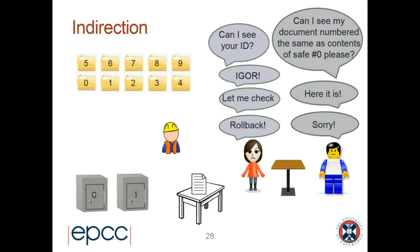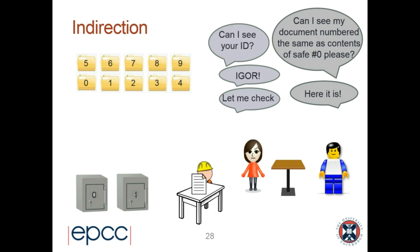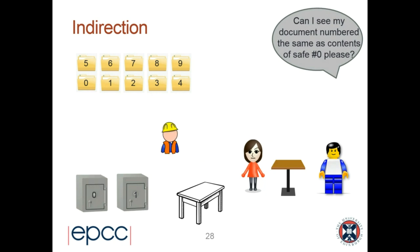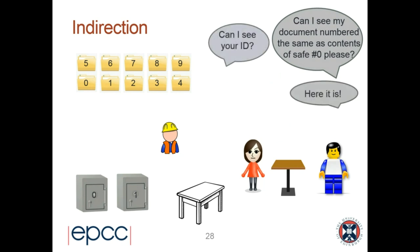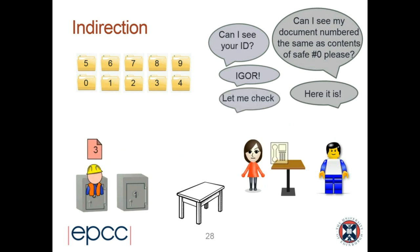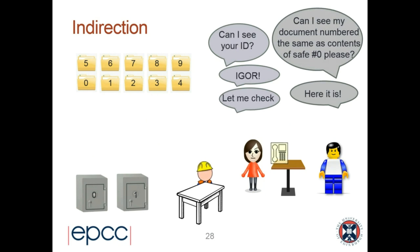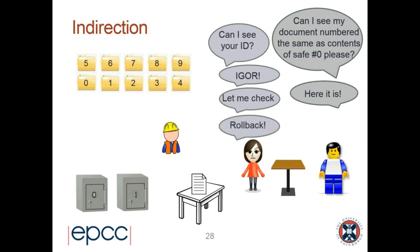Because the value in the safe was three, Igor goes and gets document number three. He comes back and waits, because he doesn't know if he's authorized. The authorization comes back — she says 'Roll back,' because that initial access to safe zero was illegal, so everything triggered by it is also illegal. The data is not delivered to me. But the rollback was incomplete: document number three is now cached on the table.